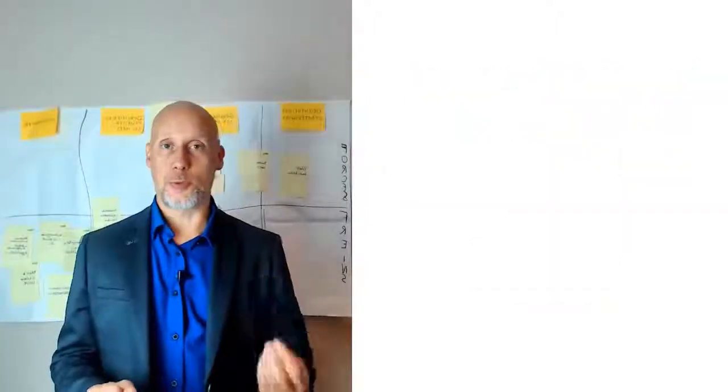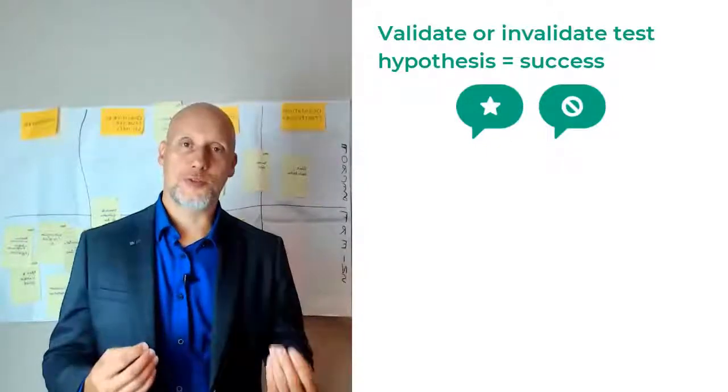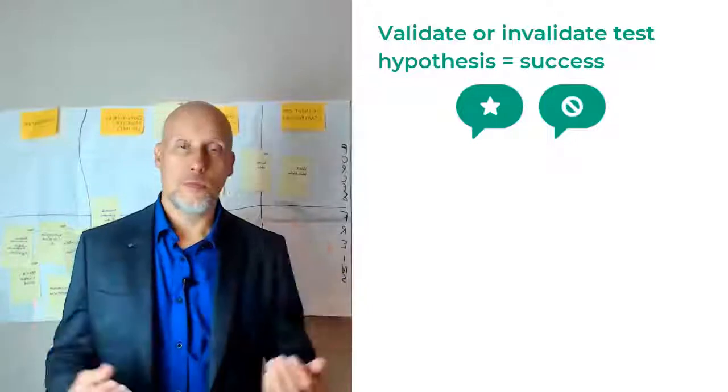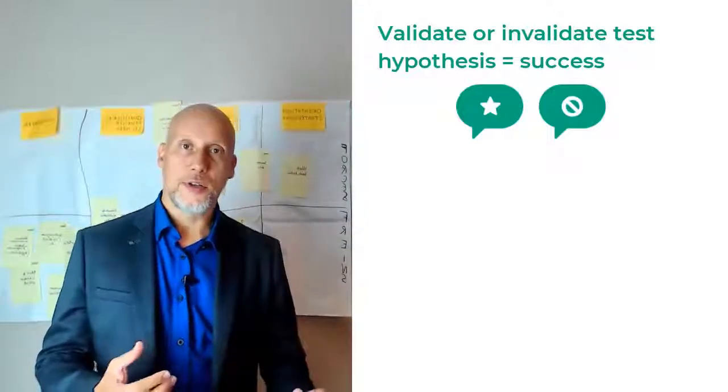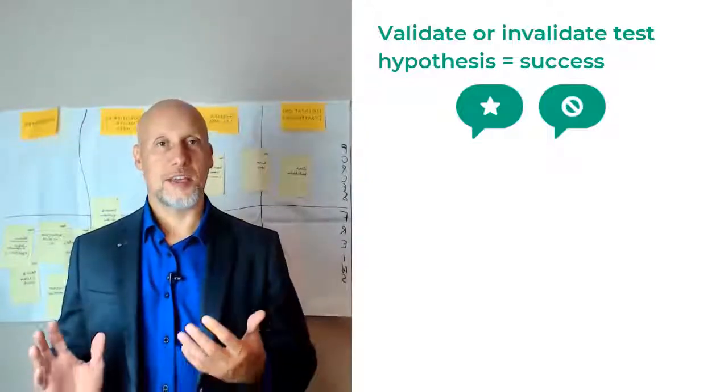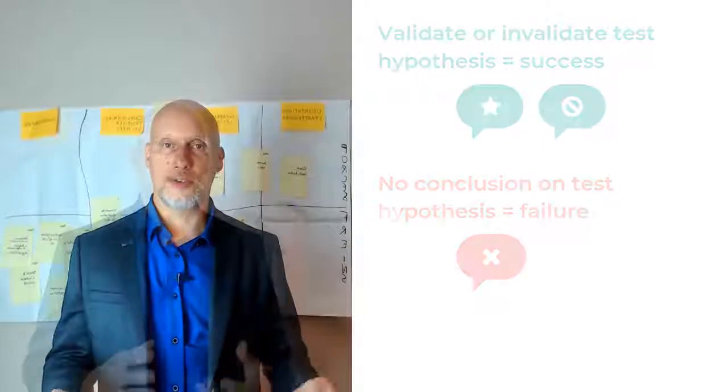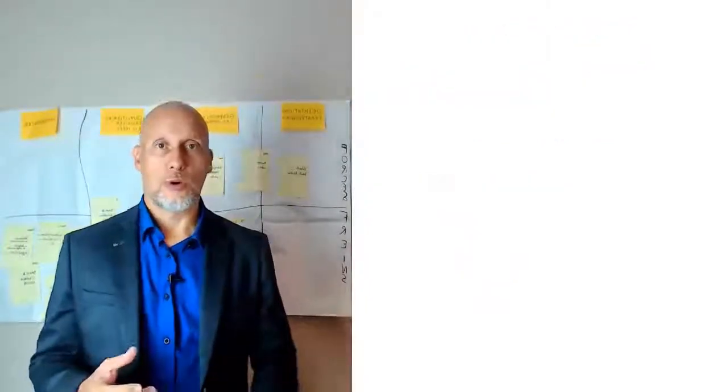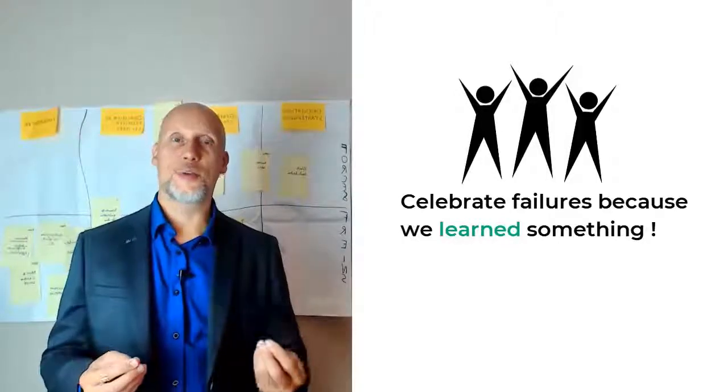The way to define the success of an experiment is also quite different from a project. Whether we validate or invalidate the hypothesis, it's a success. Why? Because if we validate it, we have a promising experiment that might become a product or whatever it's supposed to become and generate value at scale. And if we answer no, it's invalidated, not only we learn something, but also we potentially avoid to invest in something that will not yield the expected benefits. The only way to fail an experiment is if we don't know the answer. Here, the role of the agile leader and the intrapreneur is not only to bring these practices, but more importantly, to change the culture toward what is a failure and what is not.